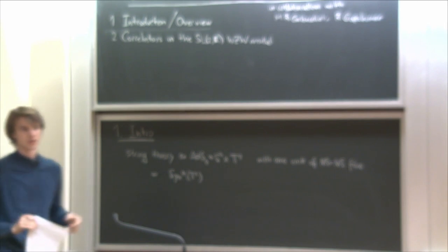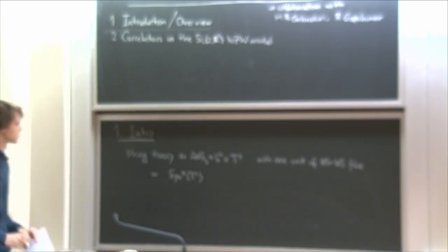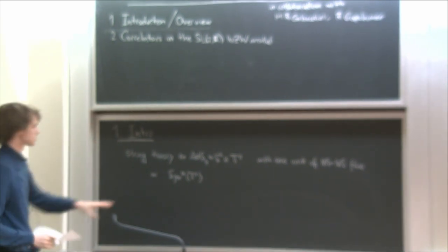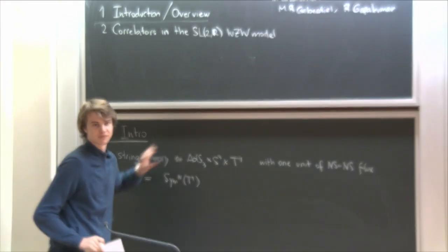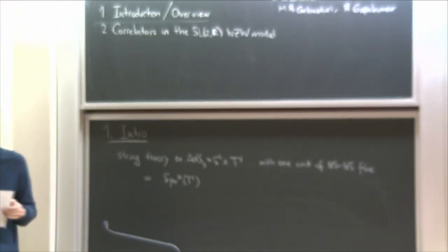Both of these sides have very large moduli spaces, and a priori it's not obvious how these are special points in the moduli space. The claim is that these special points are dual to each other. That is a very nice statement if it's true, because we can solve this theory in principle exactly, and we also hope to solve this theory exactly.